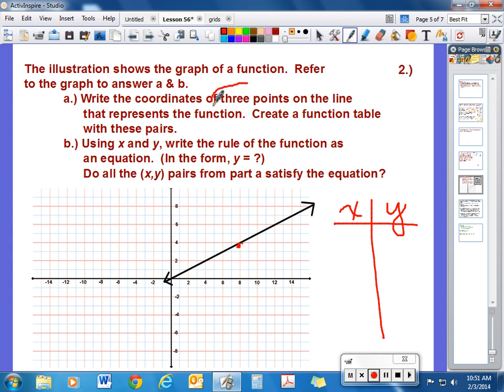Once you get those three pairs listed, then you are going to use the x and y and write a rule of the function as an equation. And it should start out y equals blank. So what can you do to x to get y? And then answer this question, do all of your x-y pairs from part a satisfy your equation? So would all these numbers that you are going to have here work in the equation that you are going to come up with? That will be number two in your notes, and then we are going to take a look at this tomorrow when you are in class. Thank you so much.